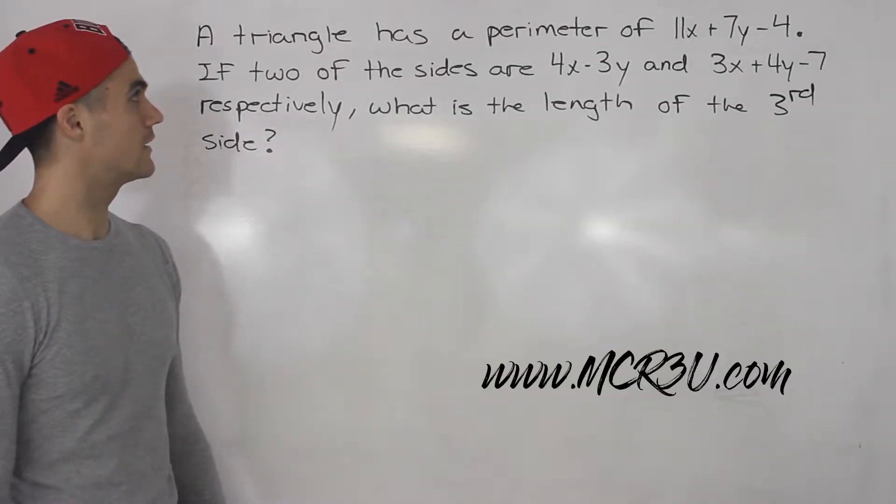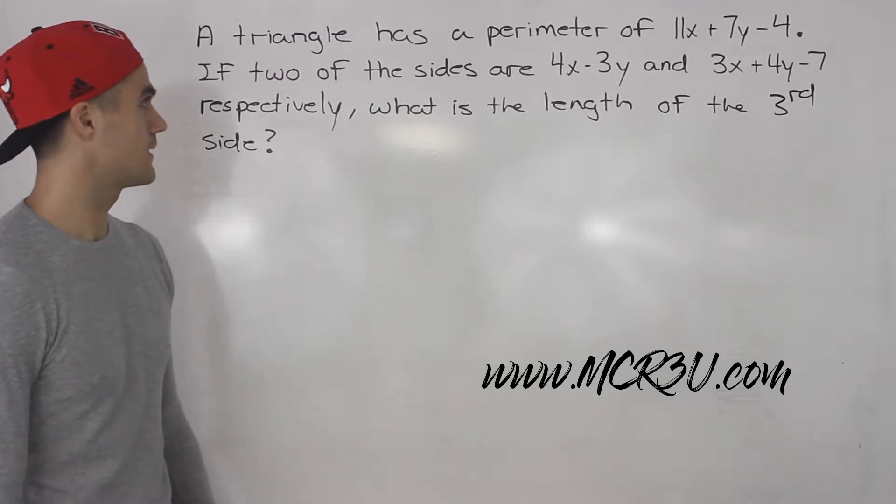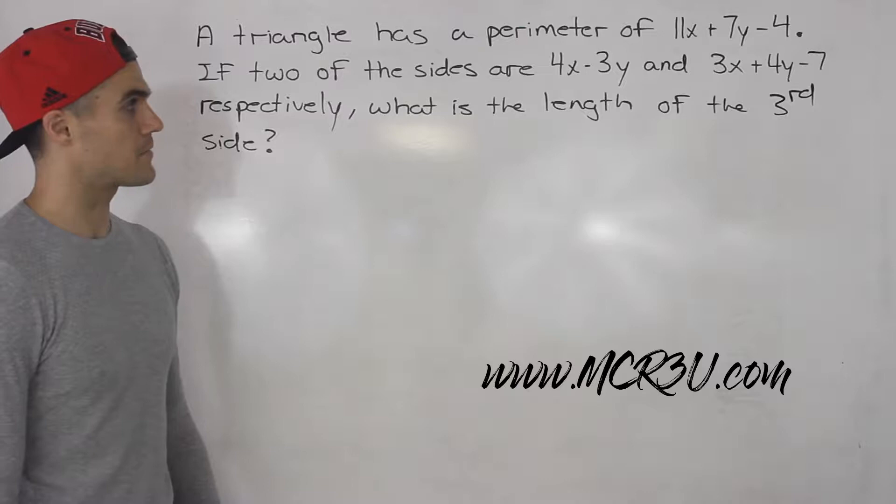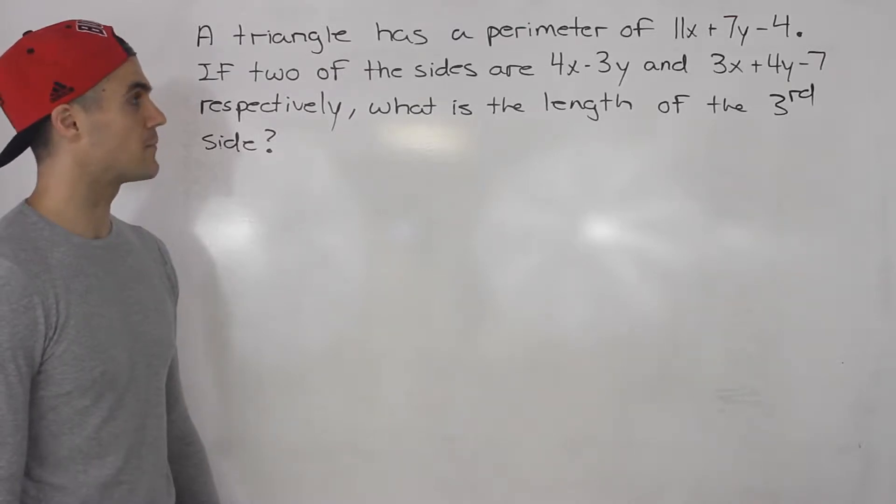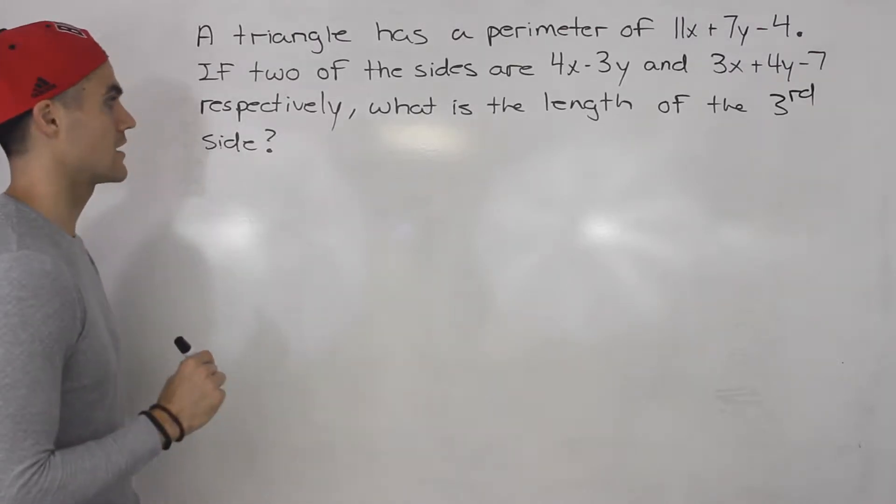In this question we're told that a triangle has a perimeter of 11x plus 7y minus 4. Two of the sides are 4x minus 3y and 3x plus 4y minus 7 respectively. What is the length of the third side?